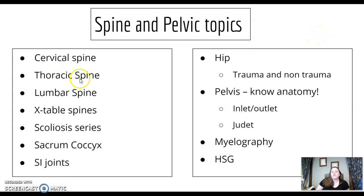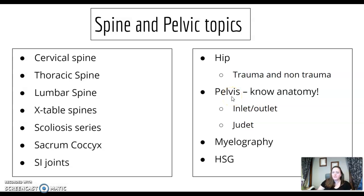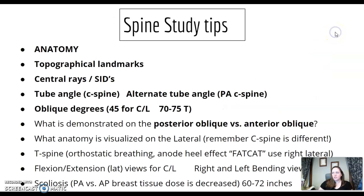Spine and pelvis topics include CT and lumbar spine, cross-table spine work, scoliosis, sacrum and coccyx, SI joints, hip — make sure you know trauma and non-trauma hip views — pelvis, and pelvic anatomy. Review the inlet and outlet views, Judet views, and those specialty views you might not do a lot at clinical. Myelogram and HSG are also included in this section.